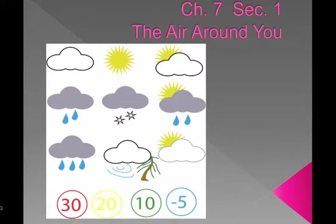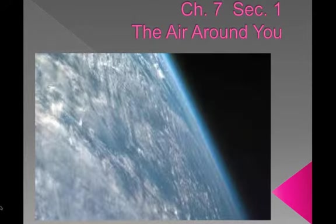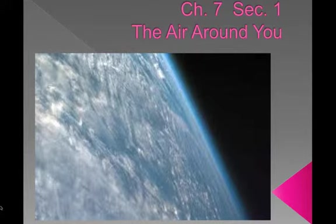Does the weather where you live change often, or is it fairly constant from day to day? Weather is the condition of Earth's atmosphere at a particular time and place. Earth's atmosphere is the envelope of gases that surrounds the planet. From space, the atmosphere appears as a thin blue layer near the horizon.